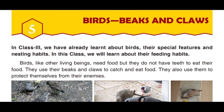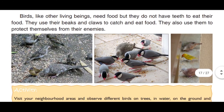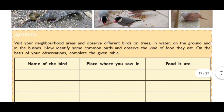Birds, like other living beings, need food but they do not have teeth to eat their food. They use their beaks and claws to catch and eat food. Birds ko bhi bhojan ki zaroorat hoti hai lekin unke daant nahi hote. Bhojan ko khane ke liye vhe apne chonch aur claws yani panjon ko istamal karte hai. They also use them to protect themselves from their enemies.